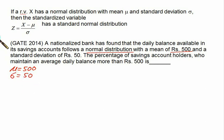We are given the value of sigma equal to 50. We want to calculate the percentage of saving account holders who maintain an average daily balance more than Rs 500. The value of X is given as 500.